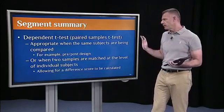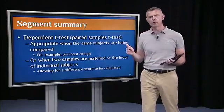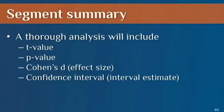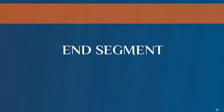So to sum up this segment, dependent t-tests are appropriate when you have the same subjects or same cases that are measured twice, so you can calculate difference scores. And a thorough analysis is going to include the t-value, the p-value, if you want to do the null hypothesis significance testing, an estimate of effect size, in this case the most appropriate one or most common one is Cohen's D. And you could also report interval estimates, rather than just point estimates.